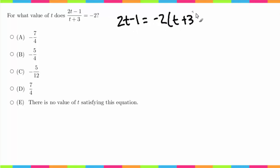Okay, so I'm just going to rewrite this: 2t - 1 equals -2t - 6.